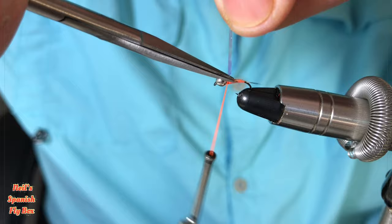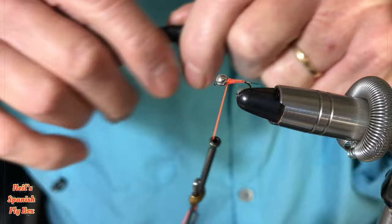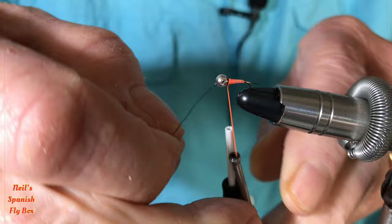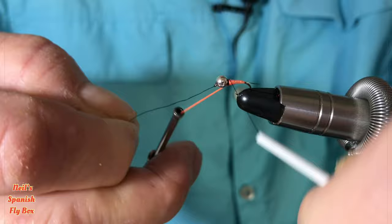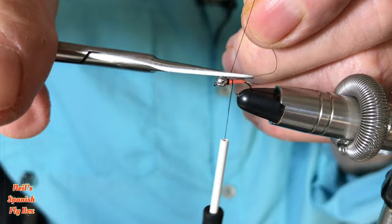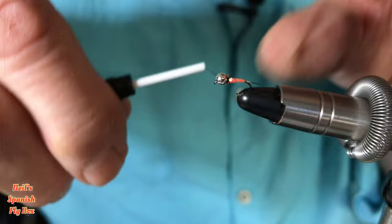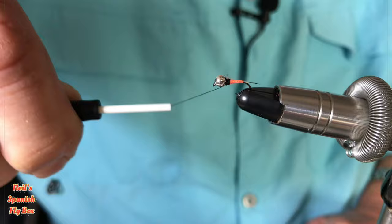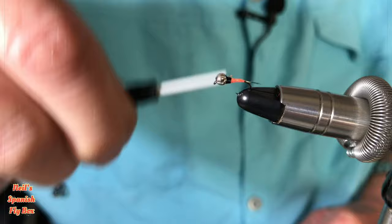I'm going to tie in some black thread so that I can put a collar on this. Get rid of the excess black and build up the collar. And we're on to this illusion again of the thorax cover by using the black thread.